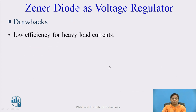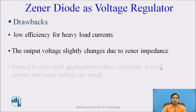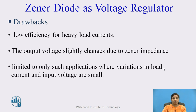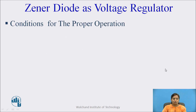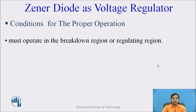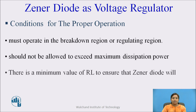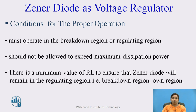The drawbacks of Zener diode as a voltage regulator are: it has low efficiency for heavy loads; the output voltage slightly changes due to Zener impedance; and it is limited to only such applications where variations in load current and input voltage are small. There are also some conditions: it must operate in the breakdown region or regulating region; it should not be allowed to exceed maximum dissipation power; and there is a minimum value of RL to ensure that the Zener diode remains in the regulating region, that is the breakdown region.